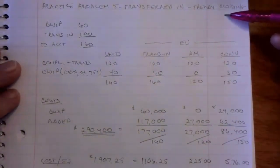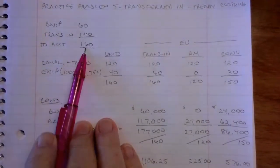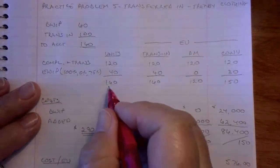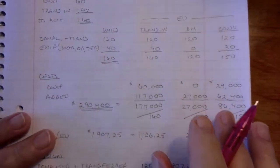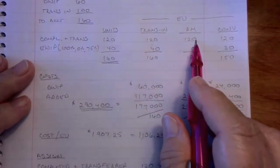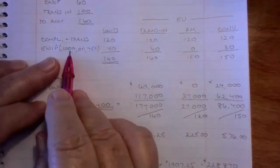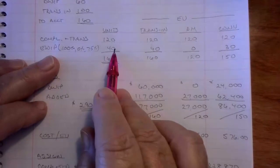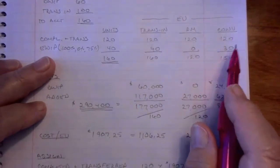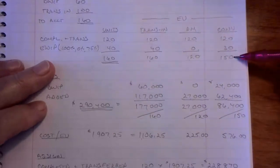So this is practice problem 5, transferred-in costs. My beginning work-in-process was 60, I transferred in 100 units, so we've got to account for 160 units. 120 were completed and transferred, and 40 are in ending work-in-process. Now for transferred-in, 120 units were completed and transferred, so that would be 100% complete for transferred-in costs. Ending work-in-process is 100% complete for transferred-in, so that's 40 units times 100%, 0% for material, and 75% for conversion. So 75% of 40 is 30. So here are my equivalent units for transferred-in costs, direct materials, and conversion.